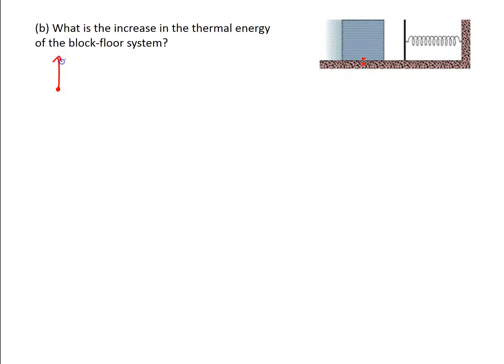Looking at the free body diagram, we have a normal force going up and mg going down, and a frictional force opposing the motion. The normal force equals mg because the object isn't moving up or down. So our frictional force is mu-k times n, and since n equals mg, it's just mu-k times m times g.